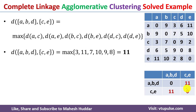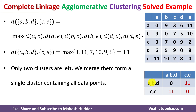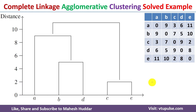Now we have only two clusters, so there is no need to look for a minimum distance. We club these two clusters into one so that we get one cluster containing all the data points. Once all data points are in one cluster, we stop the complete linkage agglomerative hierarchical clustering algorithm. The next part is to draw the dendrogram.